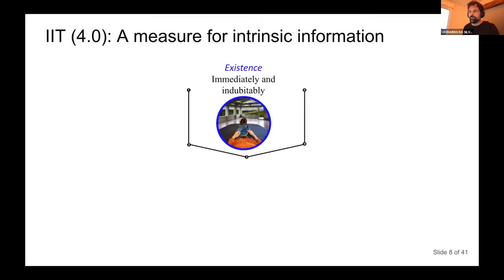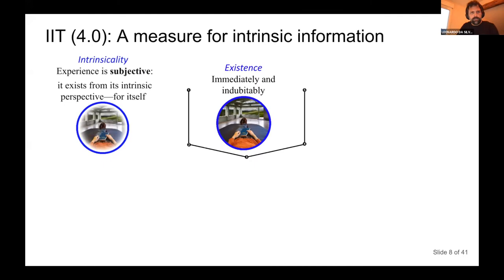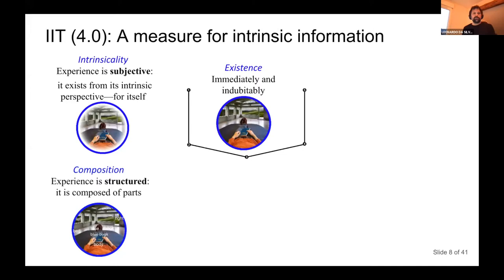The first property is intrinsicality: experience is subjective — it exists for oneself and not for others. Everything that's not intrinsic is not conscious. This is easy to show leads to contradiction: if you say something not intrinsic is part of consciousness, it now is intrinsic, falsifying the statement. The second property is composition: experience is structured and composed of parts. Every time I try to deny I have at least a few parts in my experience, I find I cannot.